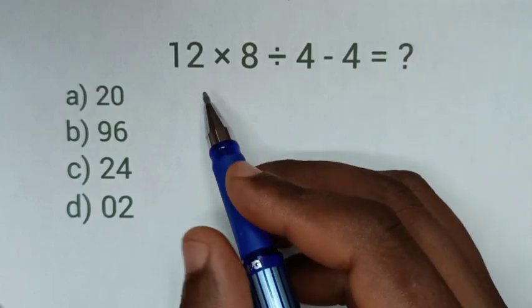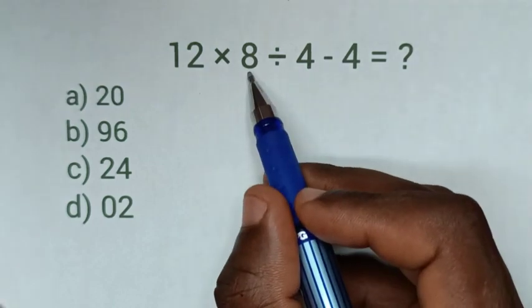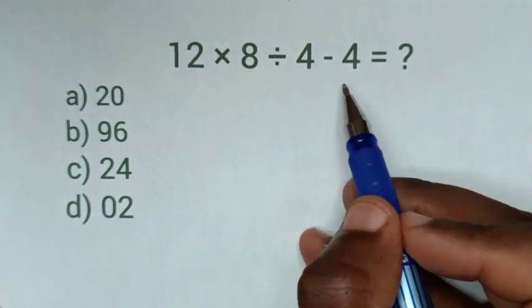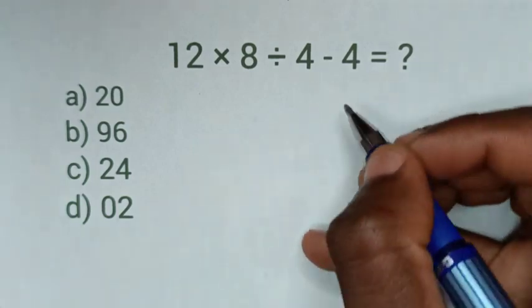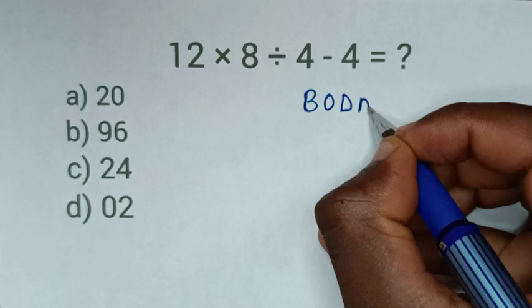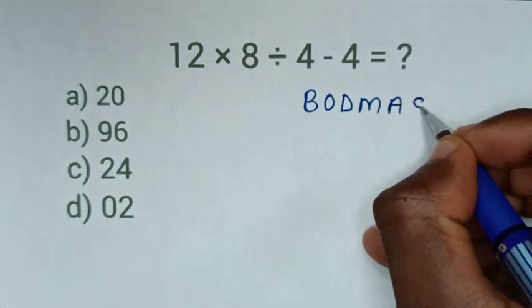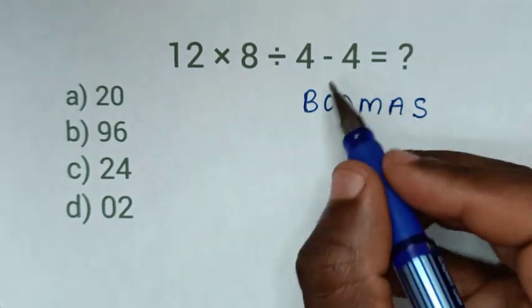Hello, how to solve this math problem which is 12 times 8 divided by 4 minus 4. We solve this problem using BODMAS. BODMAS rule where B is bracket. In here we don't have bracket. O is order, we don't have order or exponent.